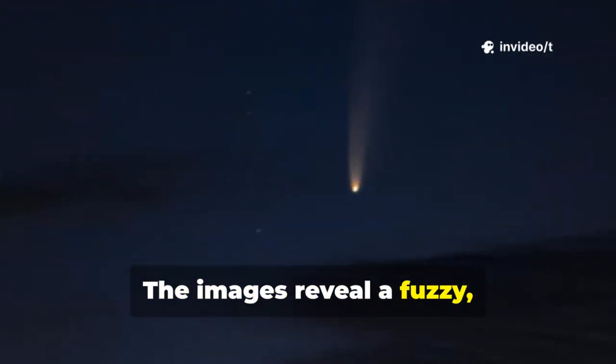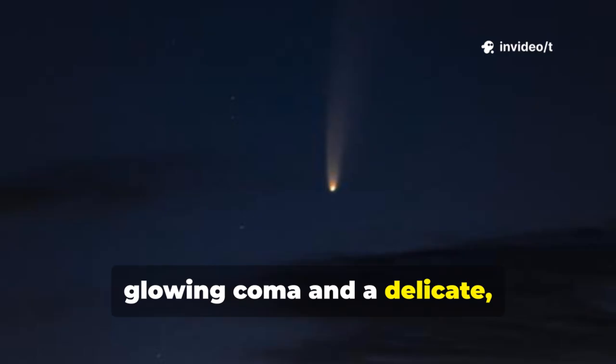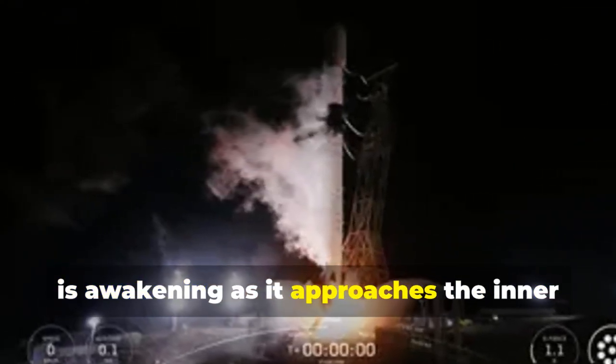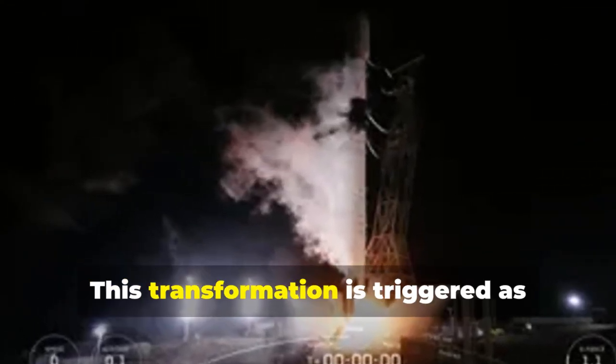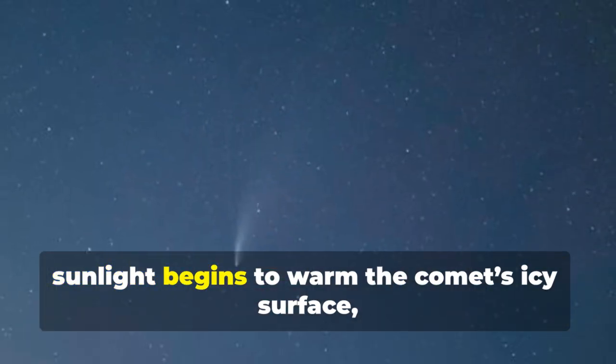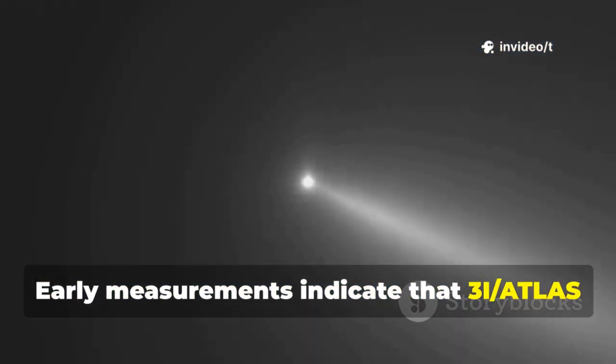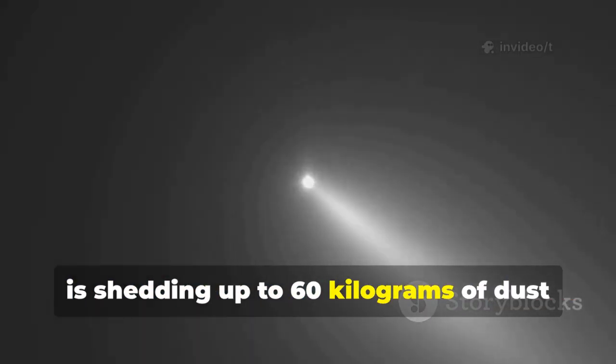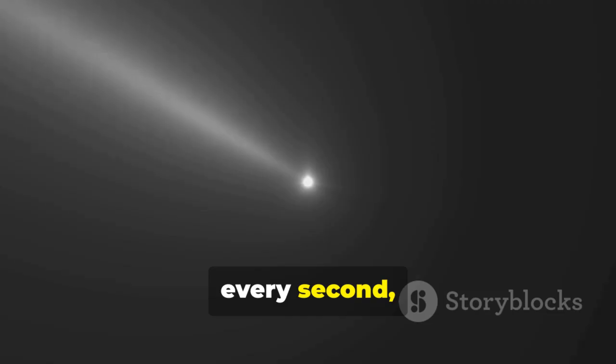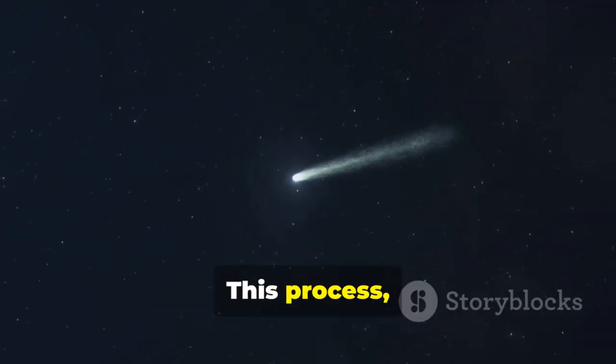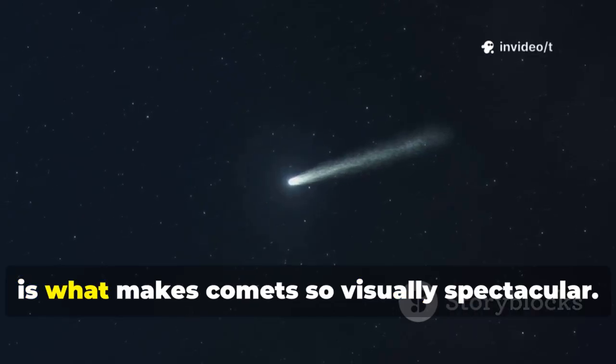The images reveal a fuzzy, glowing coma and a delicate, faint tail, classic signs that the comet is awakening as it approaches the inner solar system. This transformation is triggered as sunlight begins to warm the comet's icy surface, causing it to release gas and dust. Early measurements indicate that 3I Atlas is shedding up to 60 kilograms of dust every second, creating a shimmering trail that stretches behind it. This process, known as outgassing, is what makes comets so visually spectacular.